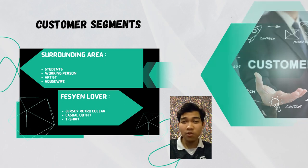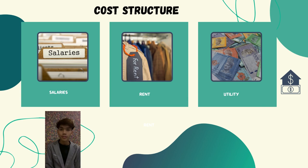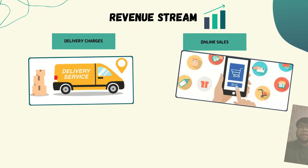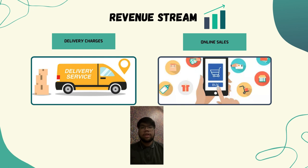Now moving to the cost structure. We need to focus first on our worker salaries, monthly rental of the shop, and last, utilities like electricity and water. Finally, for revenue, we can get income from delivery charges and online sales.